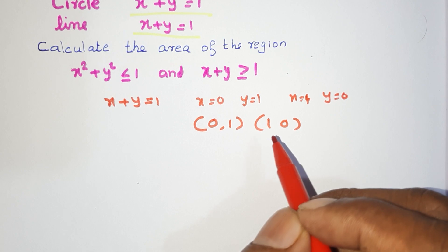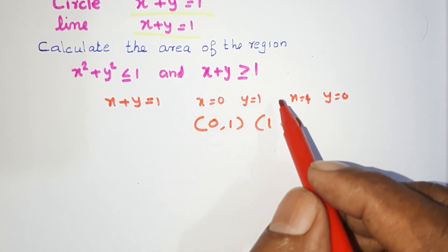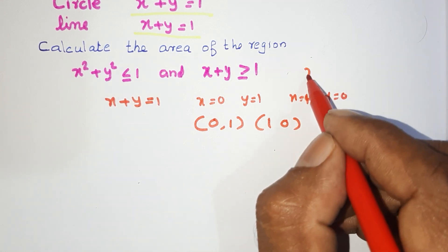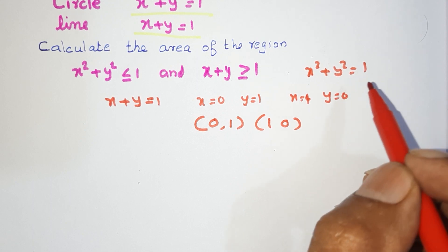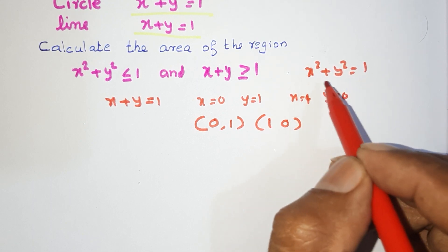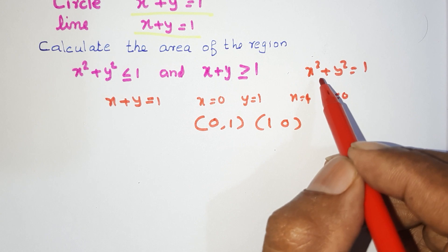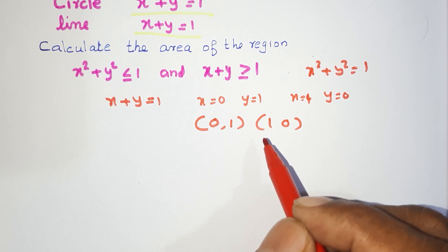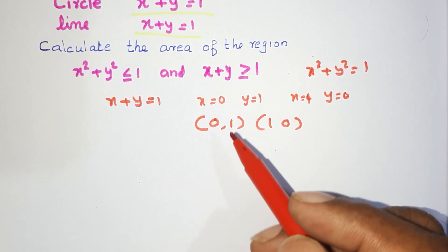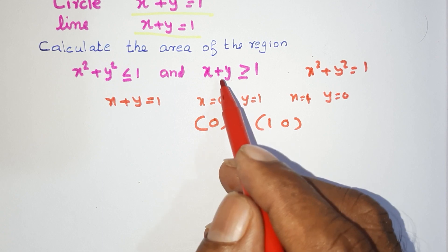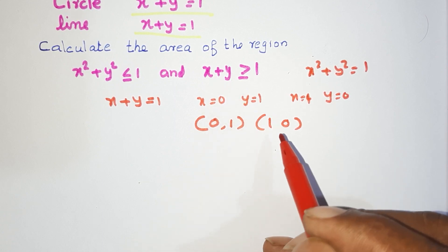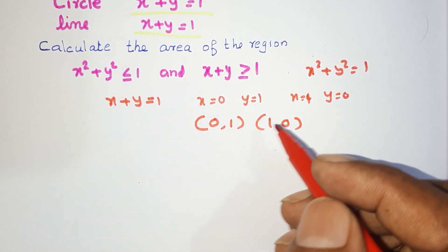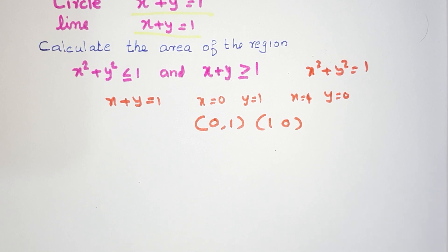The points are (0, 1) and (1, 0). We can see the points: x squared plus y squared equals 1. When x is 0, y is 1; when y is 0, x is 1. Check that the circle and this line are intersecting at these points — just go to the graph.